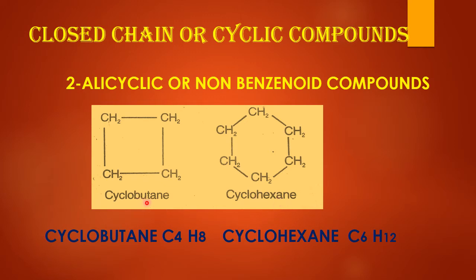The formula of cyclobutane is C4H10, whereas in straight chain butane the formula is also C4H10. The formula of cyclohexane is C6H12, whereas in normal straight chain hexane the formula is C6H14.